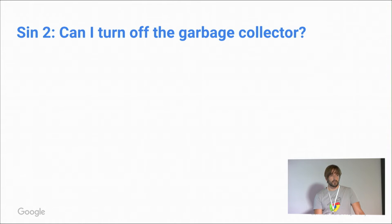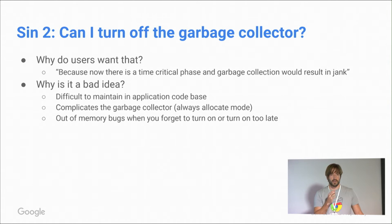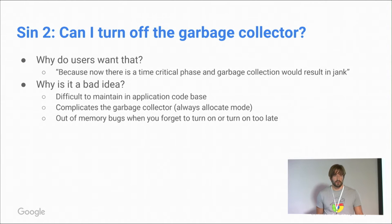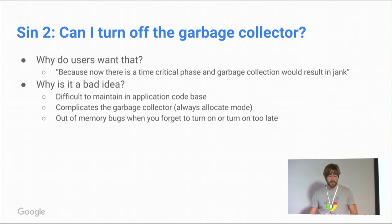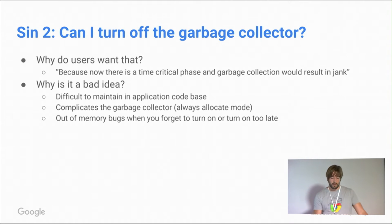Sin number two: can I turn off the garbage collector? No, please don't. The motivation is similar — you're about to execute a really time-critical phase and don't want the GC to interfere. You could turn off the GC and for sure avoid it during that phase. But it's quite difficult to maintain. As your codebase grows, it gets more complicated, and it's also complicated to support from a VM side. You will end up with out-of-memory bugs that are really hard to track down — if you forget to turn it back on, or have a code branch where it stays off, you may have a really bad time.